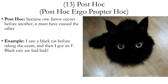The post hoc fallacy is short for post hoc ergo propter hoc, which means 'after which, therefore because of which.' This is an argument that says because one factor occurs before another, it must have been the cause of the other. Example: I saw a black cat before taking the exam and then I got an F — black cats are bad luck. Sometimes when one event comes before another, the first is the cause of the other, but not always. If you assume without sufficient evidence that the first event caused the second, that's the post hoc fallacy.